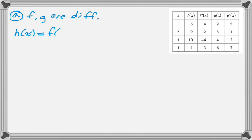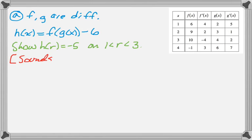and then they define this weird function for us, h of x, which is f of g of x minus 6. And the first question is to show that there's some value of r between 1 and 3, where h of r is negative 5. And this really sounds like an intermediate value theorem question to me. So, since it sounds like an intermediate value theorem question, I want to show that the function is continuous, and then I want to show that it's less than that value and then greater than that value. Okay,